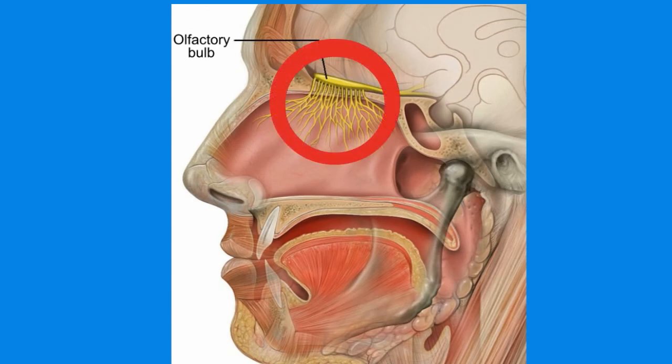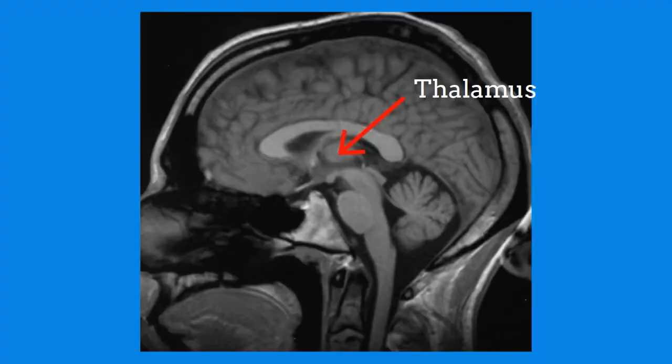The olfactory bulb relays the signal to the brain. This smell information also goes to the thalamus, a structure that serves as a relay station for much of the sensory information coming into the brain.